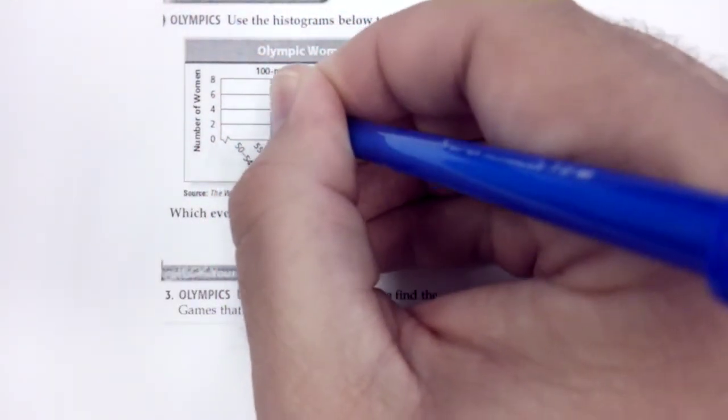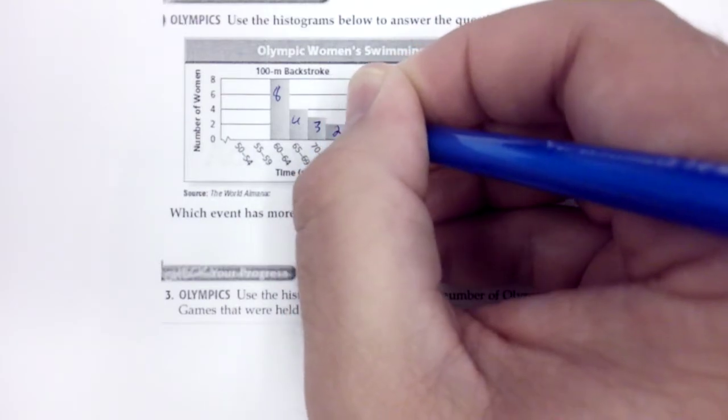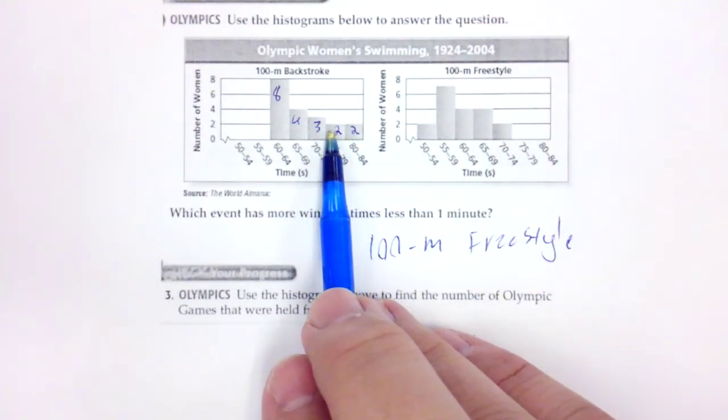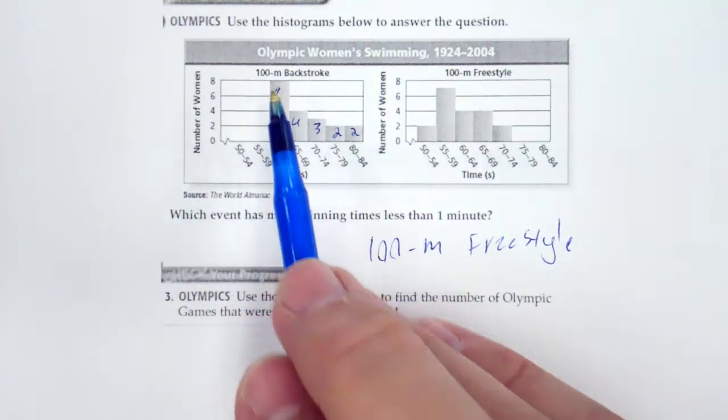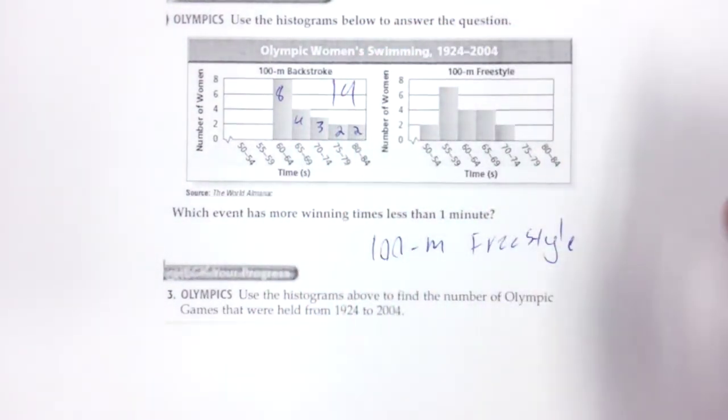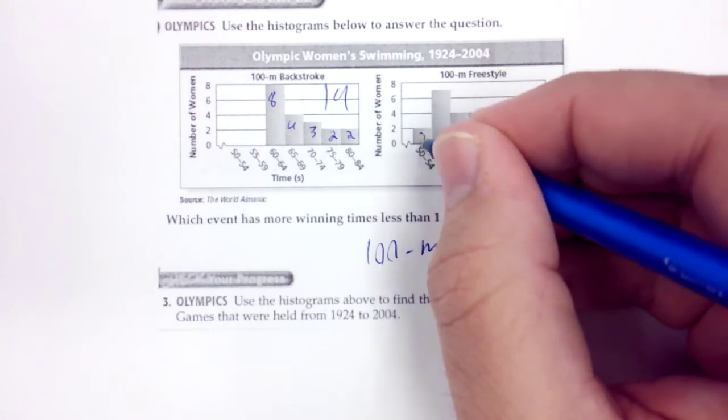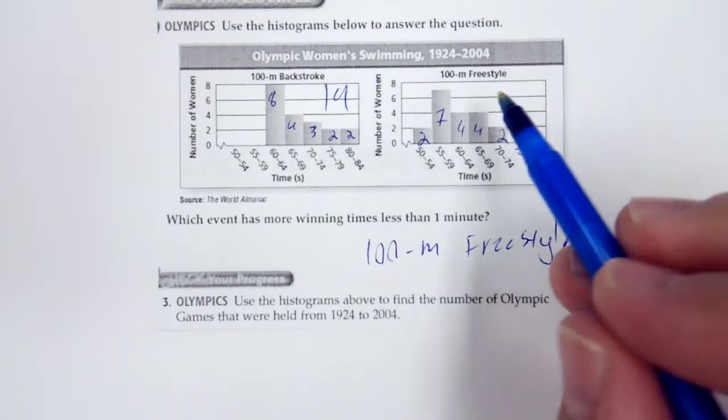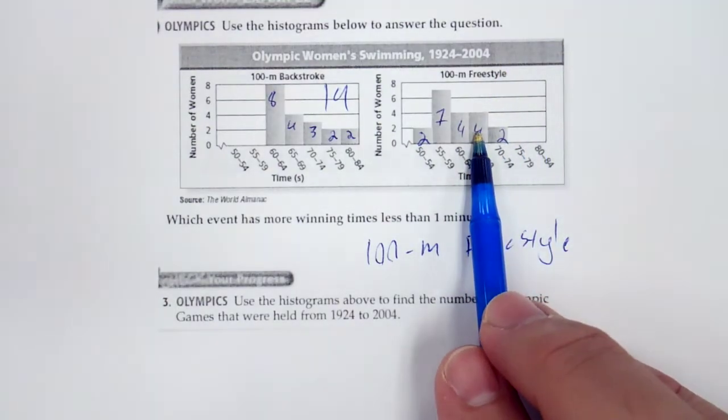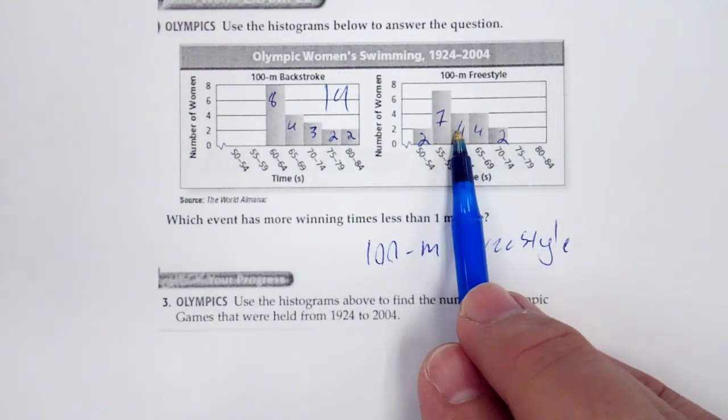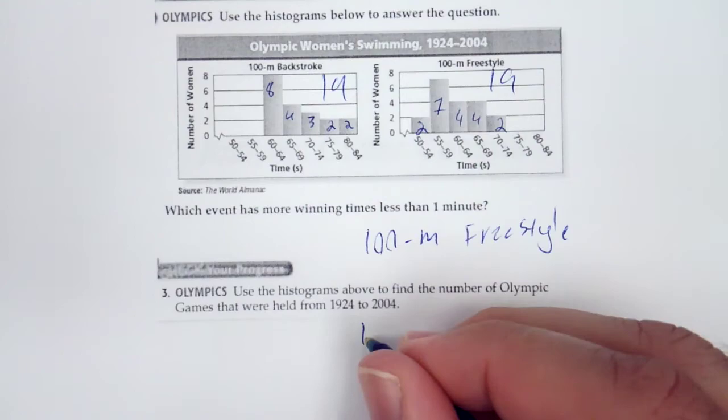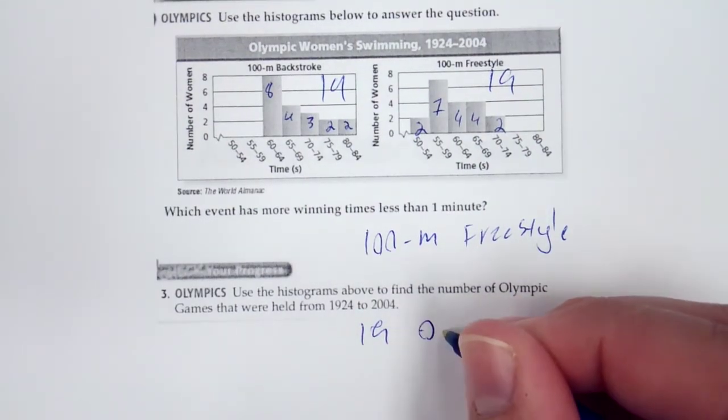So 8, 4, 3, 2, and 2. Okay, so we have 4, 7, 11, 19. This should also be 19. So that's 2, 7, 4, 4, 4, 2. So 2, 6, 10, 17, 19. Okay, so we have 19 Olympic games.